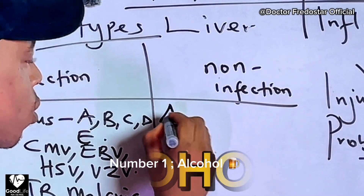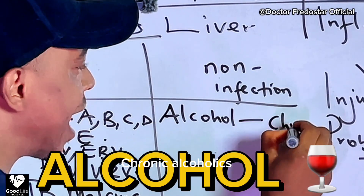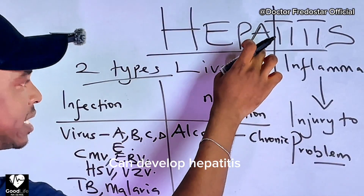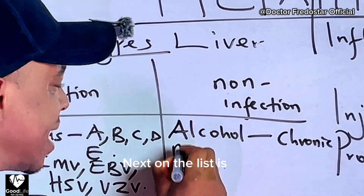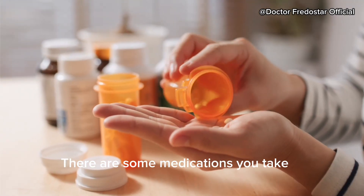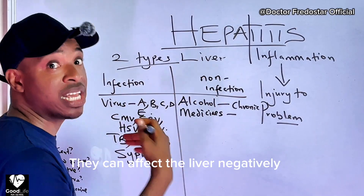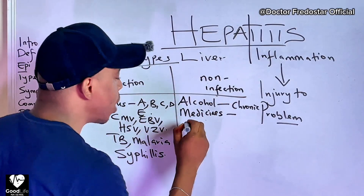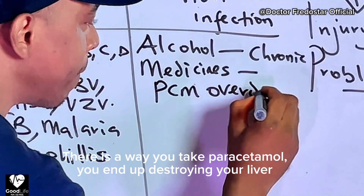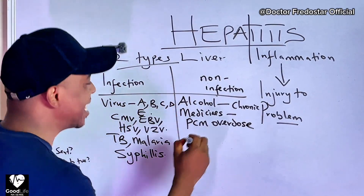Now where there is no infection causing hepatitis — number one: alcohol. People who drink alcohol, chronic alcoholic people, can get hepatitis. Another one: medicines. Some medicines, if you abuse them, can spoil the liver. Number one — paracetamol overdose. If you drink paracetamol in excess, you can spoil your liver.